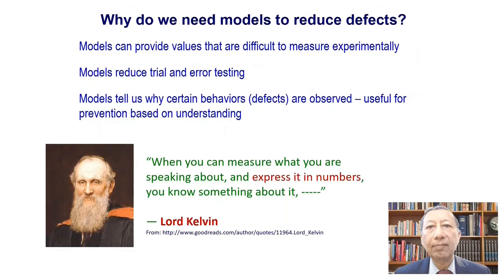There are many good reasons why we want to use models to reduce defects. First, models should allow us to get values of parameters that are difficult to measure experimentally — an example would be a very high transient temperature that changes very rapidly. Also, models can reduce the total number of trial and error testing. This is important because of the high cost of feedstock materials and, more importantly, the machines for additive manufacturing, so trial and error testing is very expensive. Also, models can tell us why defects are observed, giving us insight that we cannot get by any other way.